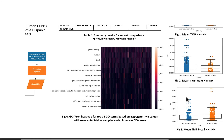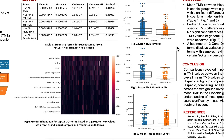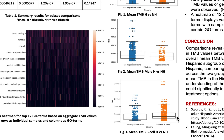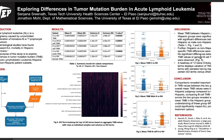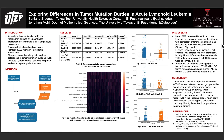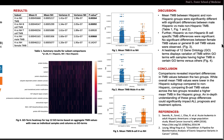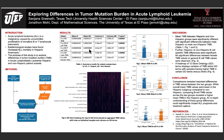These sets of comparisons revealed important differences in TMB values between the two groups. While overall mean TMB values were lower in the Hispanic subgroup compared to the non-Hispanic ones, B-cell-specific TMB values across the two groups revealed a higher mean in the Hispanic subgroup. These findings are in agreement with previous studies that have found consistently higher age-adjusted incidence rates of B-cell-specific ALL in the Hispanic population. An in-depth understanding of these group differences could significantly impact ALL prognosis and treatment options.